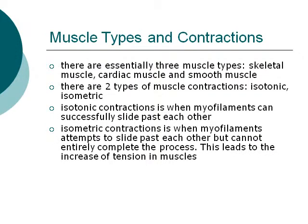Muscle types and contractions: There are essentially three muscle types — skeletal muscle, cardiac muscle, and smooth muscle. There are two types of muscle contractions: isotonic and isometric. Isotonic contractions occur when myofilaments can successfully slide past each other. Isometric contractions occur when myofilaments attempt to slide past each other but cannot entirely complete the process, which in turn leads to an increase of tension in muscles.